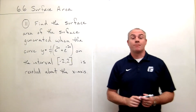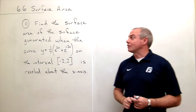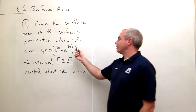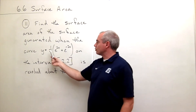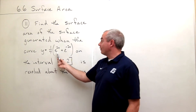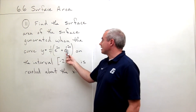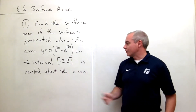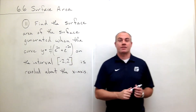I'm the calculus professor and today I'll be talking about surface area. In problem number 11, we'd like to find the surface area of the surface generated when the curve y equals one-fourth of e to the 2x plus e to the negative 2x on the interval negative 2 to 2 is revolved about the x-axis.